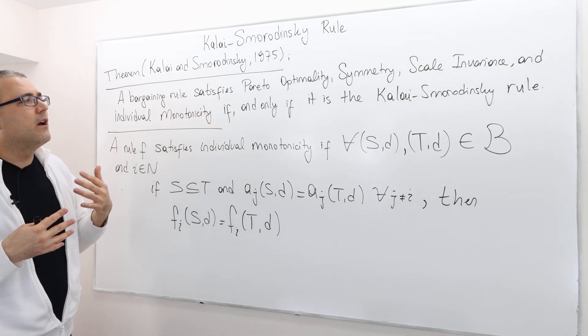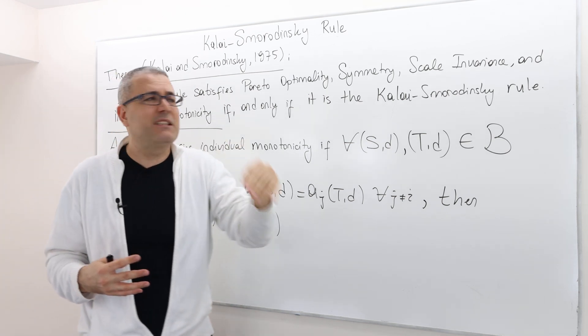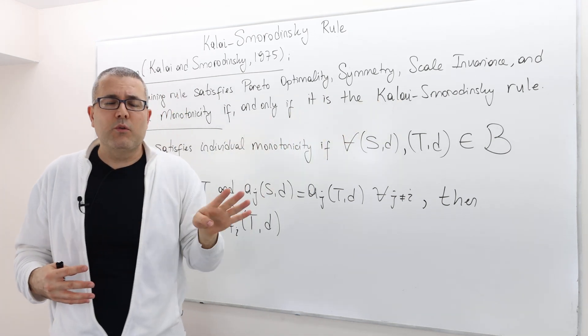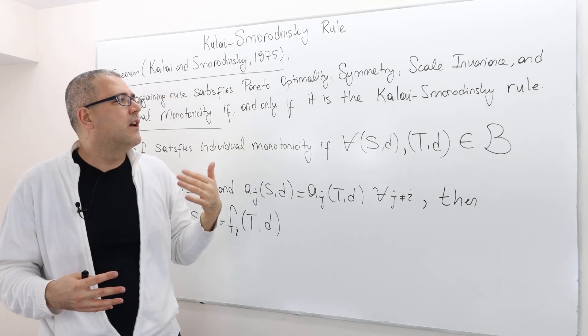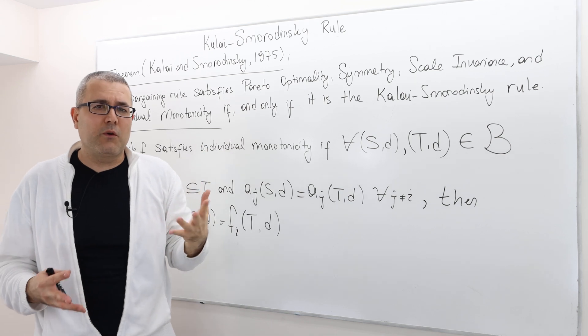And this is an if and only if statement. That means if a rule satisfies those four properties, then it must be Kalai-Smorodinsky. It can't be anything else. And also Kalai-Smorodinsky rule satisfies those four properties.